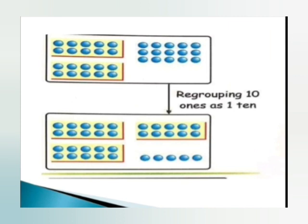Students, aapko picture mein dikh raha hoga — pehle hamare paas the 2 tens and 15 ones. Picture mein pehle hamare paas 2 groups of 10 hain aur 15 balls extra hain. Uske baad humne kya kiya? Humne 15 ko 2 parts mein split kar diya — 10 plus 5. So humne ek group banaya 10 ka, regrouping 10 ones as 1 ten kar diya, aur 5 balls ko extra mein rakh diya. Toh ab hamare paas answer mein hai 3 groups of tens and 5 ones.